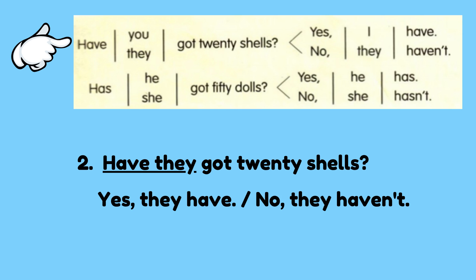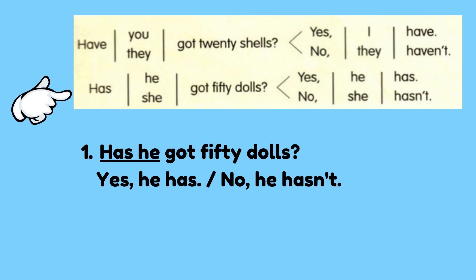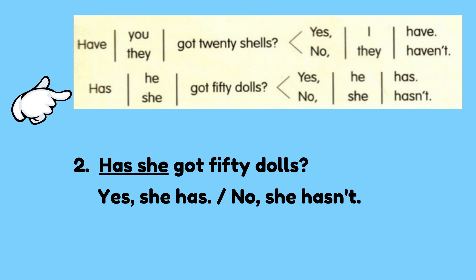Have they got 20 shells? Yes, they have. Or no, they haven't. We must use has with he or she. For example, number 1: has he got 50 dolls? The answer should be yes, he has, or no, he hasn't. Has she got 50 dolls? Yes, she has, or no, she hasn't.